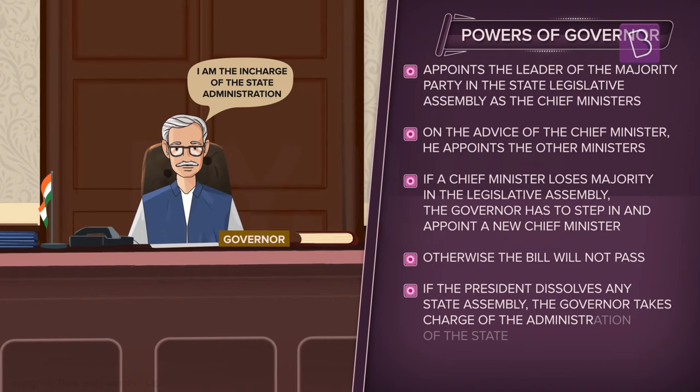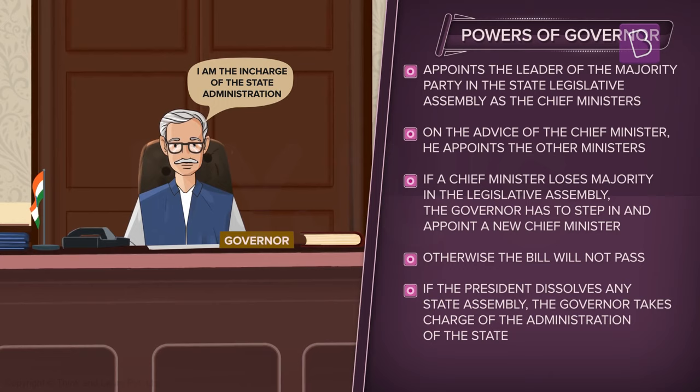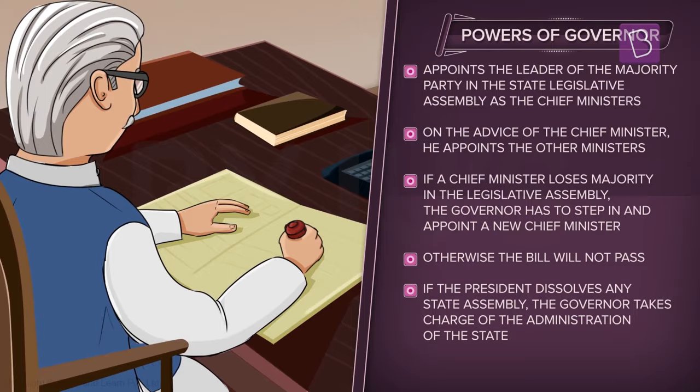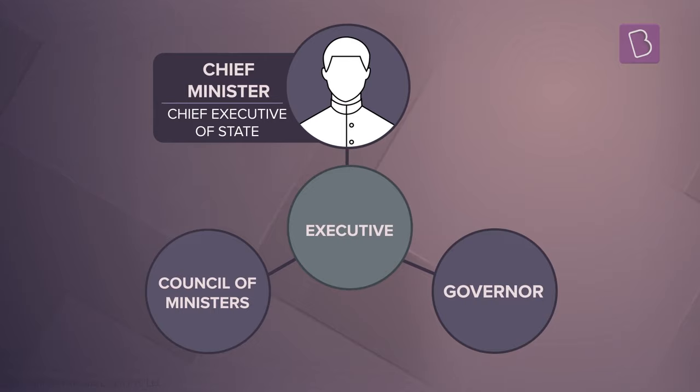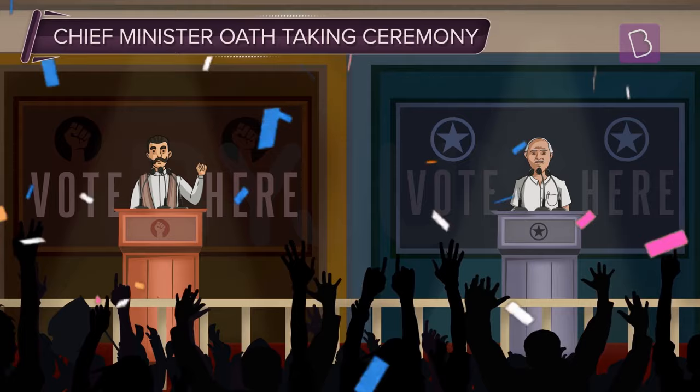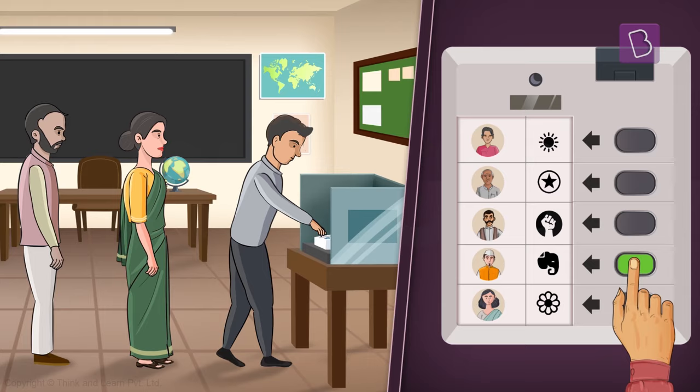During a president's rule, the state does not have an elected government. The central government runs the state through the governor. The governor appoints the leader of the party or the group that gains majority in the election for legislative assembly as the chief minister.